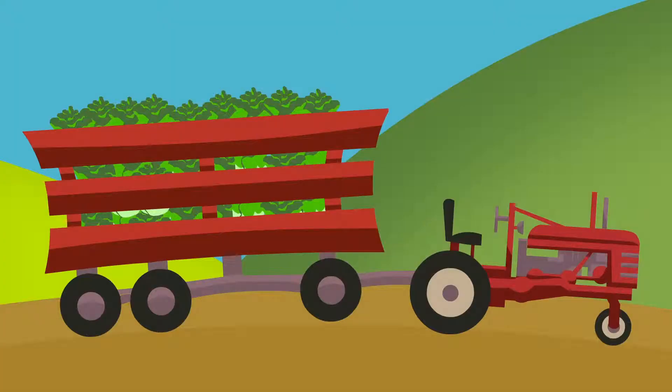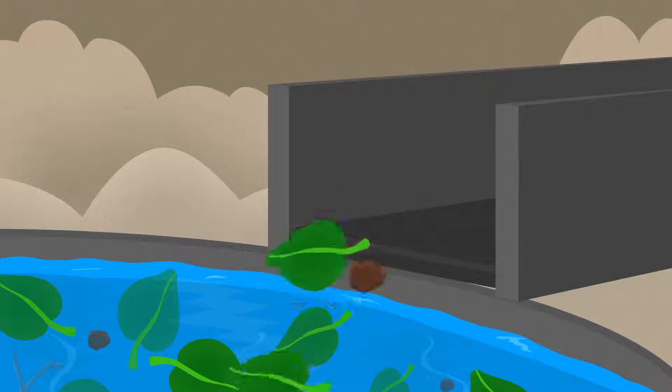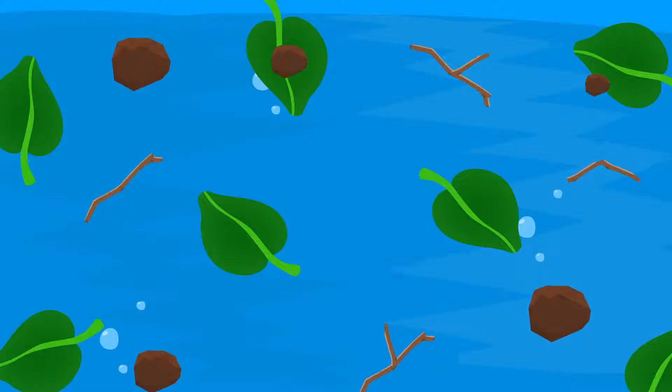Leafy greens arrive from the field with dirt and debris attached. Most of this organic matter falls off during washing, ending up in the wash water.